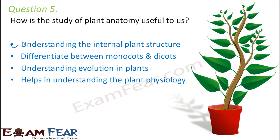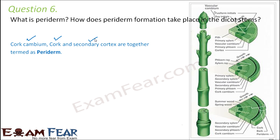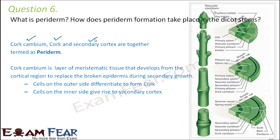The next question: what is periderm and how does periderm formation take place in dicot stems? Periderm is a collective term for cork cambium, cork, and secondary cortex together. Cork cambium is a layer of meristematic tissue that develops in the cortical region to compensate for the broken epidermis during secondary growth. Being meristematic, it produces cells on the outer side forming cork and on the inner side forming secondary cortex.